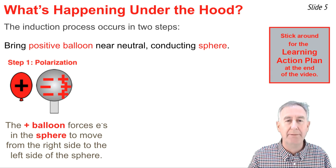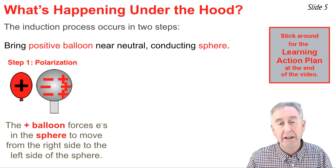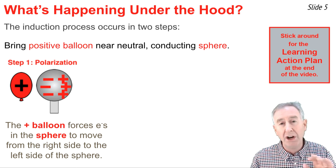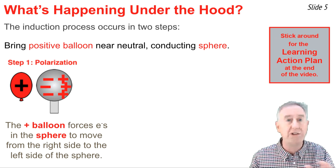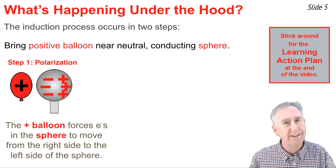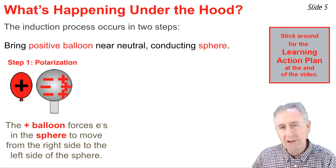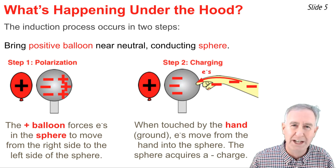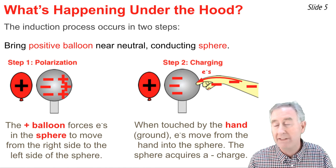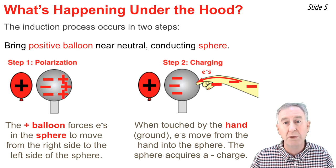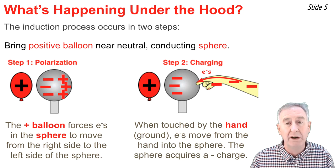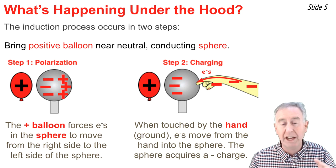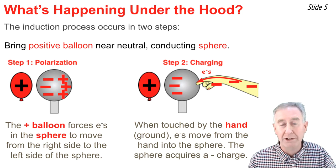In the first step, the polarization step, a charged object is brought near the neutral conducting sphere. That positively charged balloon is there to polarize the sphere. Electrons within the sphere, which are charged negatively, are drawn towards that positively charged balloon and migrate across the surface to get closer to it — opposites attract. At the end of the polarization step, the sphere has negative charges on the left side and positive charges on the right side. In the second step, the charging step, the hand touches the right side of the sphere, and electrons from the hand are drawn into the sphere, neutralizing the positive excess charge there. The sphere gains electrons from the hand and acquires a negative charge.